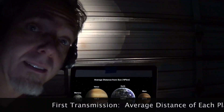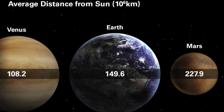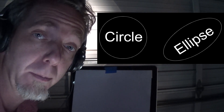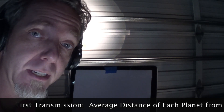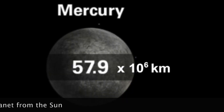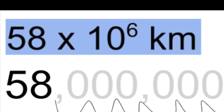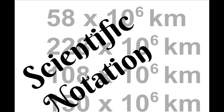We've sent probes to all of these neighboring planets and we're waiting on details to come back soon. Here's our first transmission. It's telling us the average distance of each planet from the sun. When we talk about average distance, planets orbit in an ellipse — not a circle, an ellipse. So sometimes they're closer to the sun and sometimes they're further away. We're looking at numbers for the average distance. Mercury is 58 times 10 to the 6 kilometers from the sun. Anytime you see a number with a times 10, that tells you how many spots to move the decimal. We don't write these numbers out because they are enormously long. This is called scientific notation.